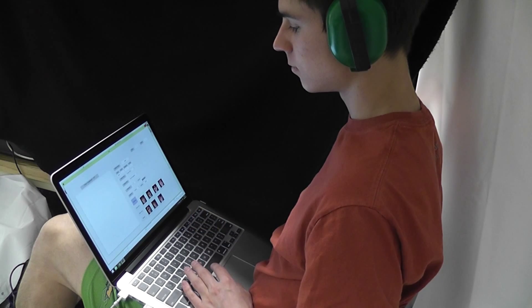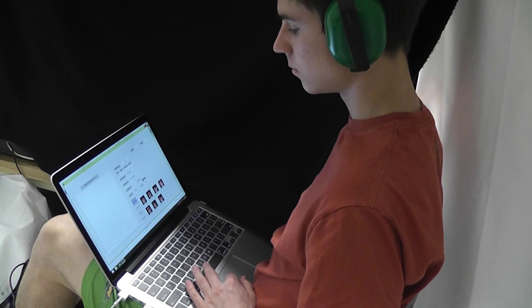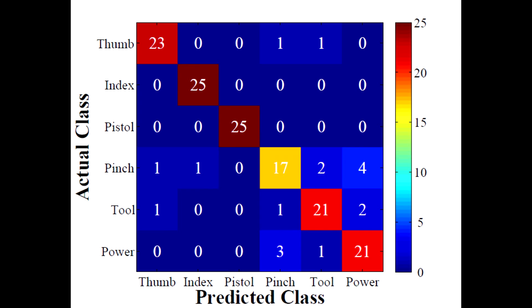After a brief six-minute training session, the prosthesis is hidden to the user, and the six grips were presented to him five times each in random order. On average, subjects were able to correctly classify the grips with 88% accuracy.